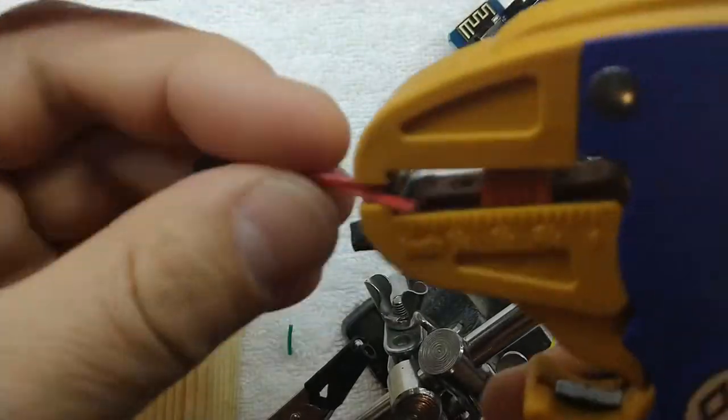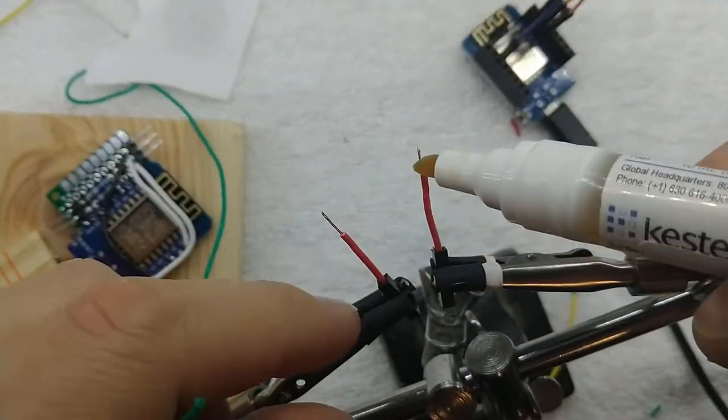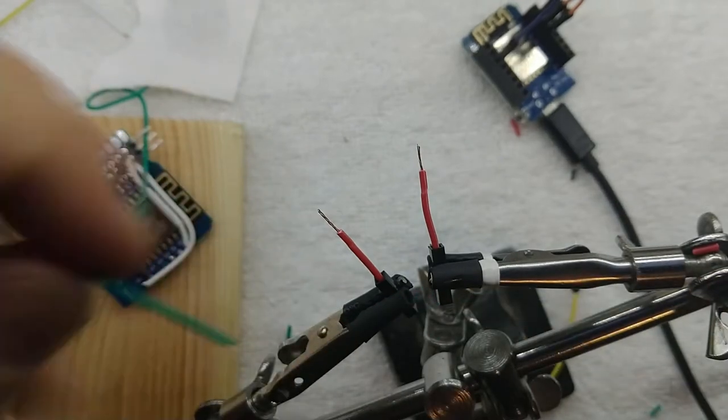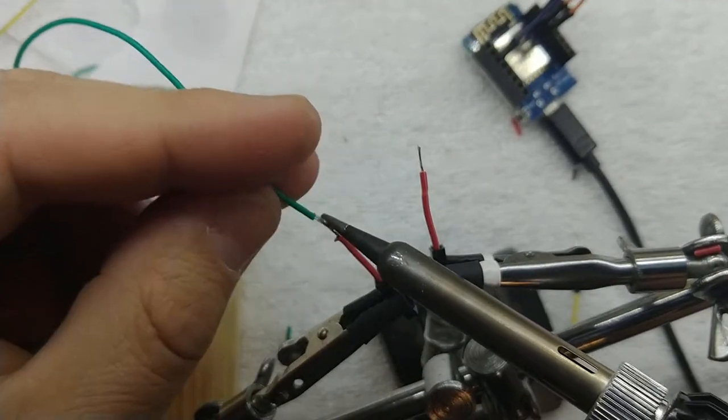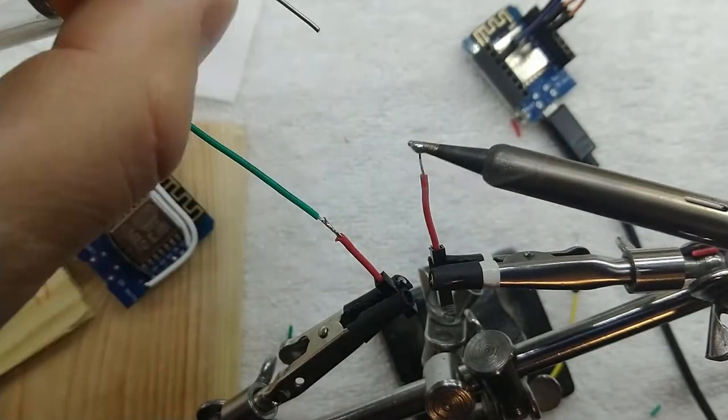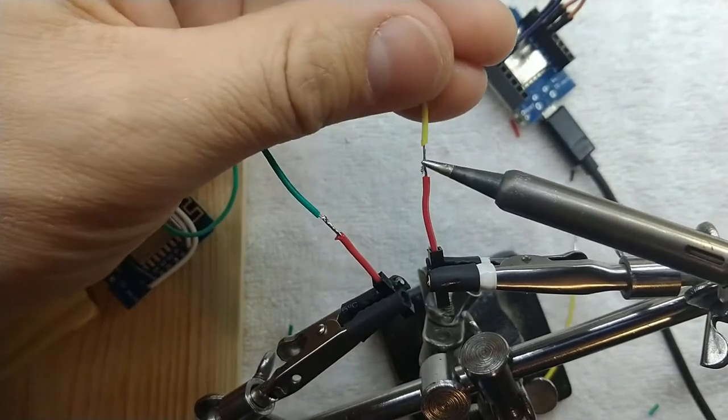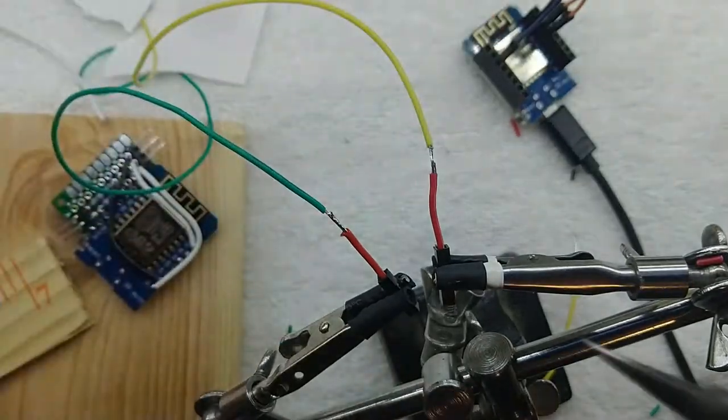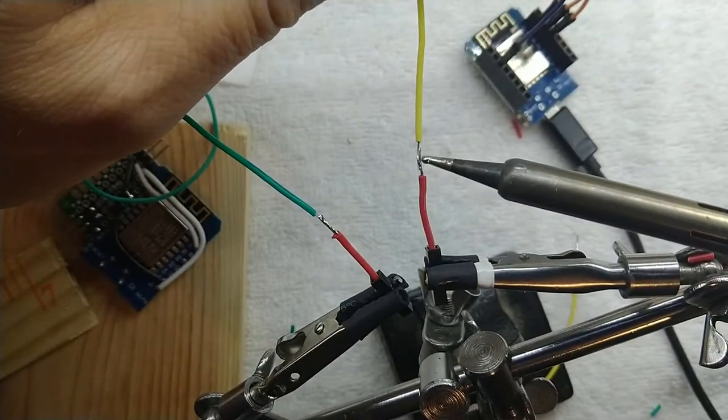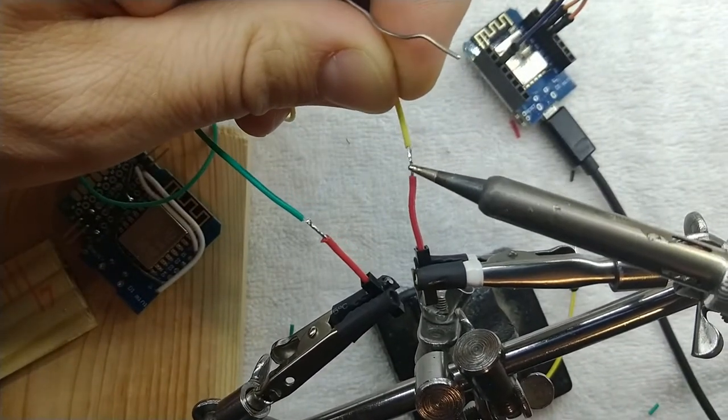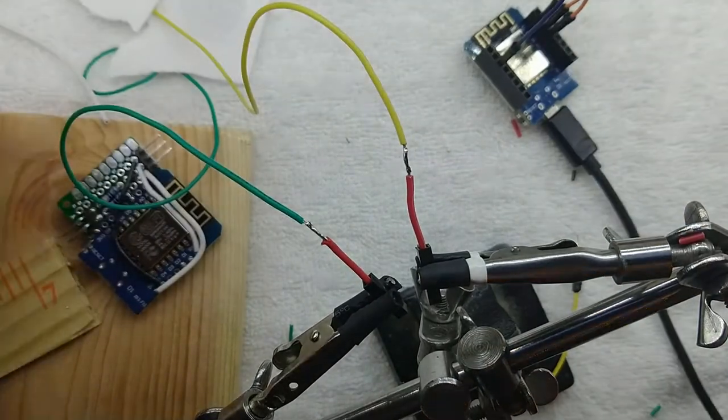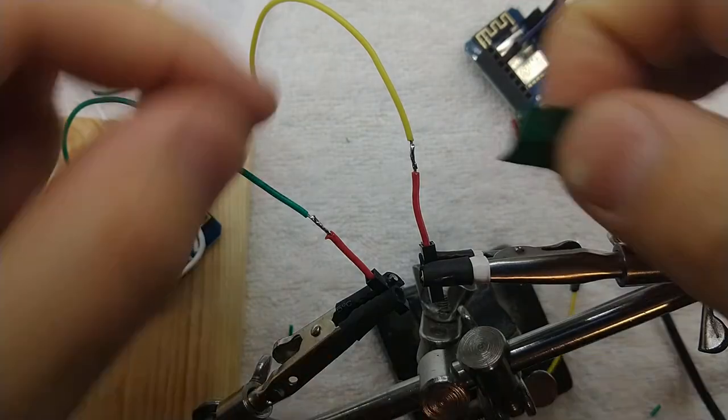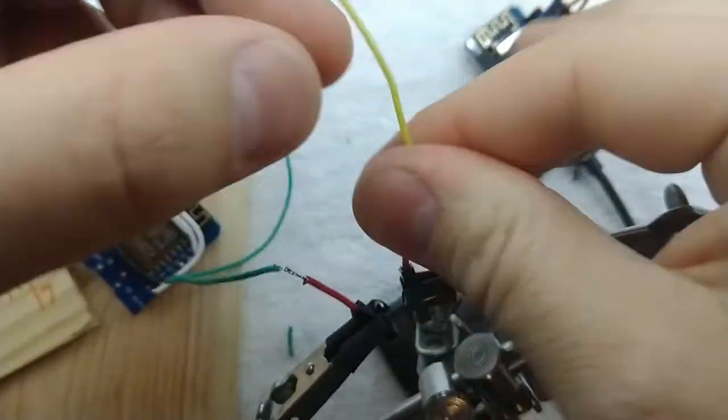Instead of using the same sort of female headers here, I found an old jumper that I wasn't using anymore, cut it in half and used those ends instead. Sometimes more solder is better. Use a little electrical tape or heat shrink to cover the bare connections.